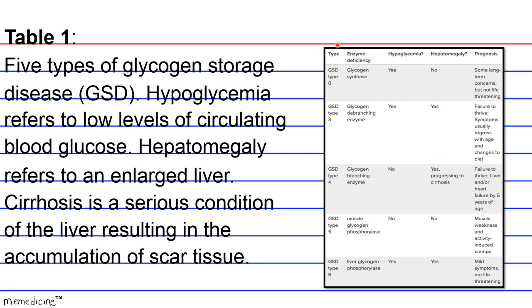We have listed the GSD type, 0 through 6, excluding type 1 and 2. We have the enzyme deficiency, whether hepatomegaly and hypoglycemia are present or not, and then the prognosis for an individual with the glycogen storage disease.